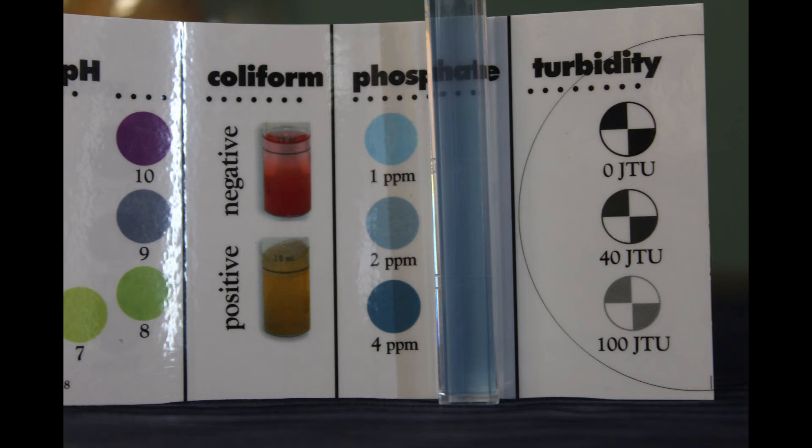Our next test is phosphate. I would say our sample result is between two and four parts per million. Unfortunately, this is just fair — our good to excellent range is one to two parts per million. This could be a result of stormwater runoff from manicured lawns and green spaces located near our testing site.